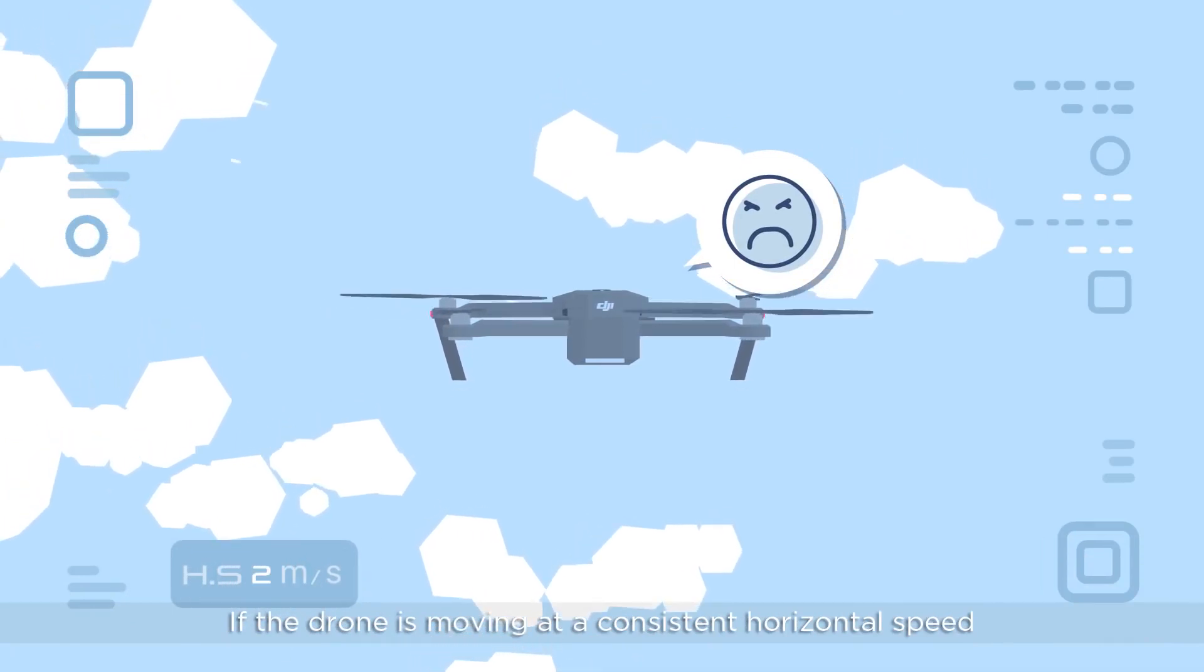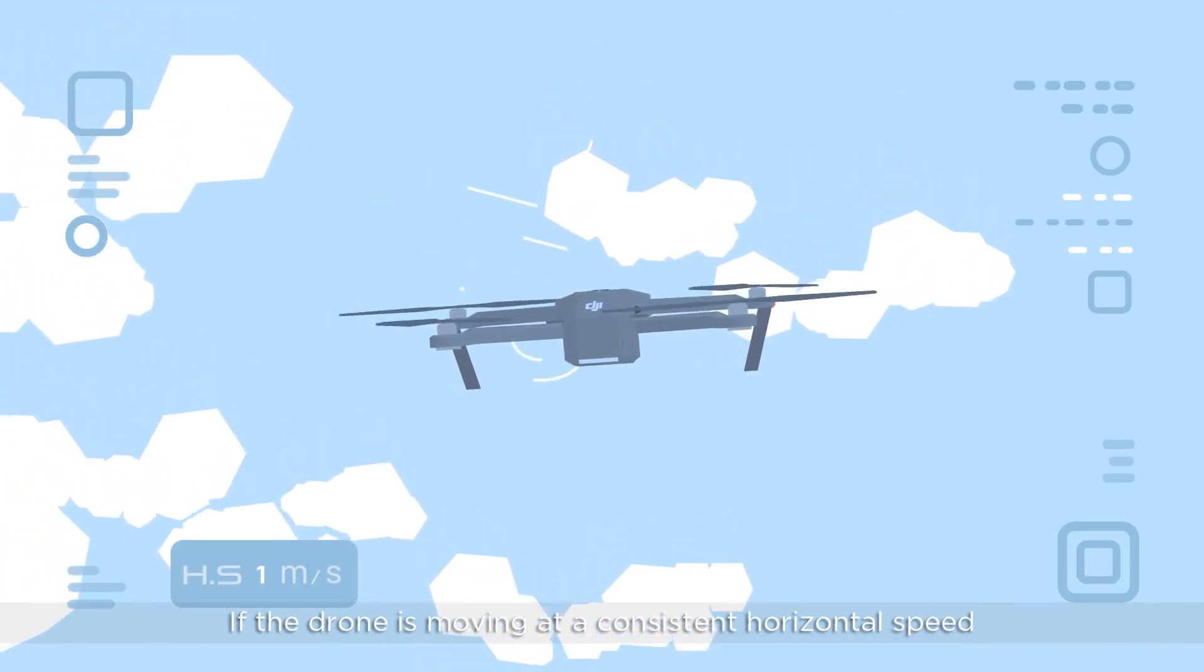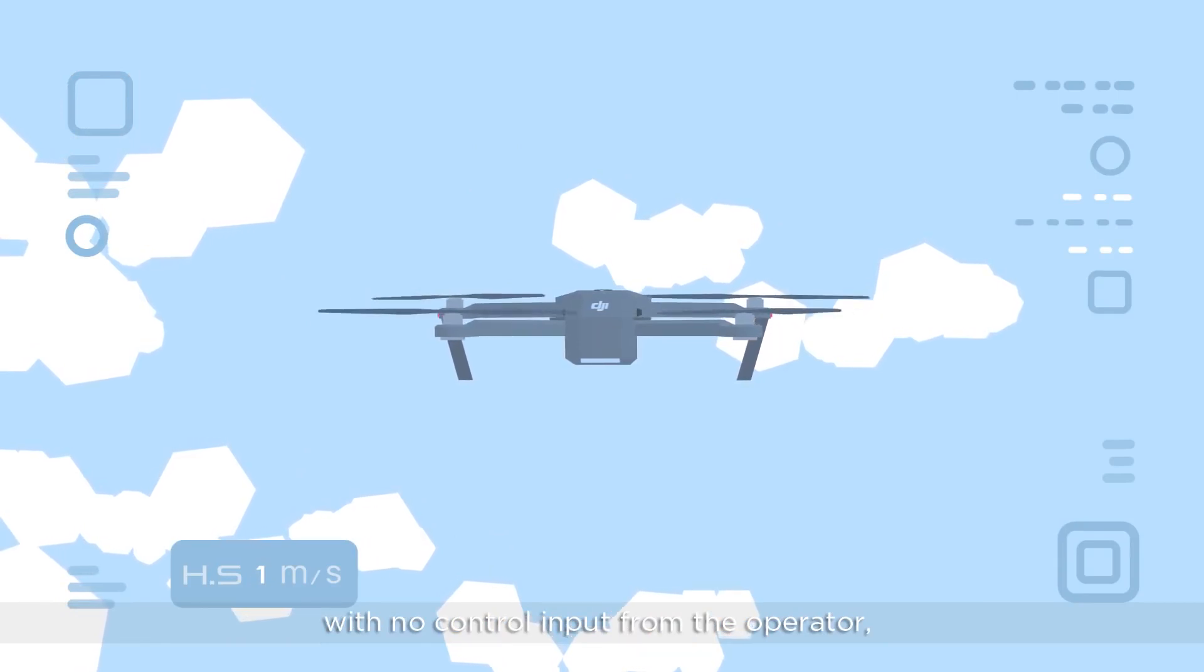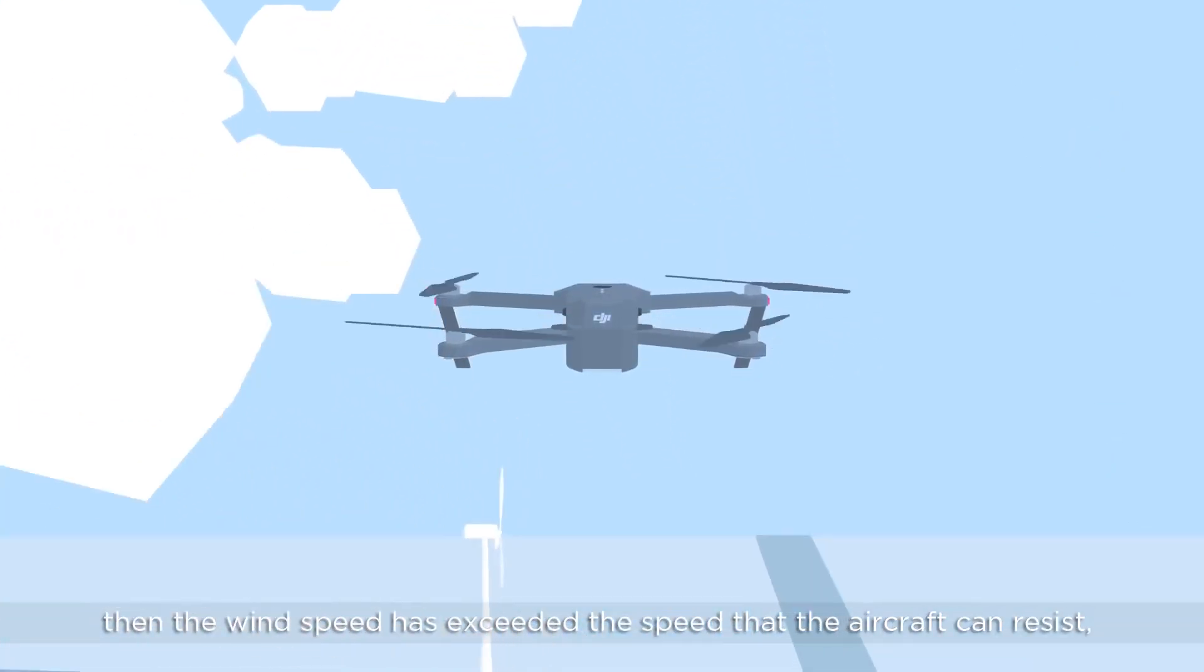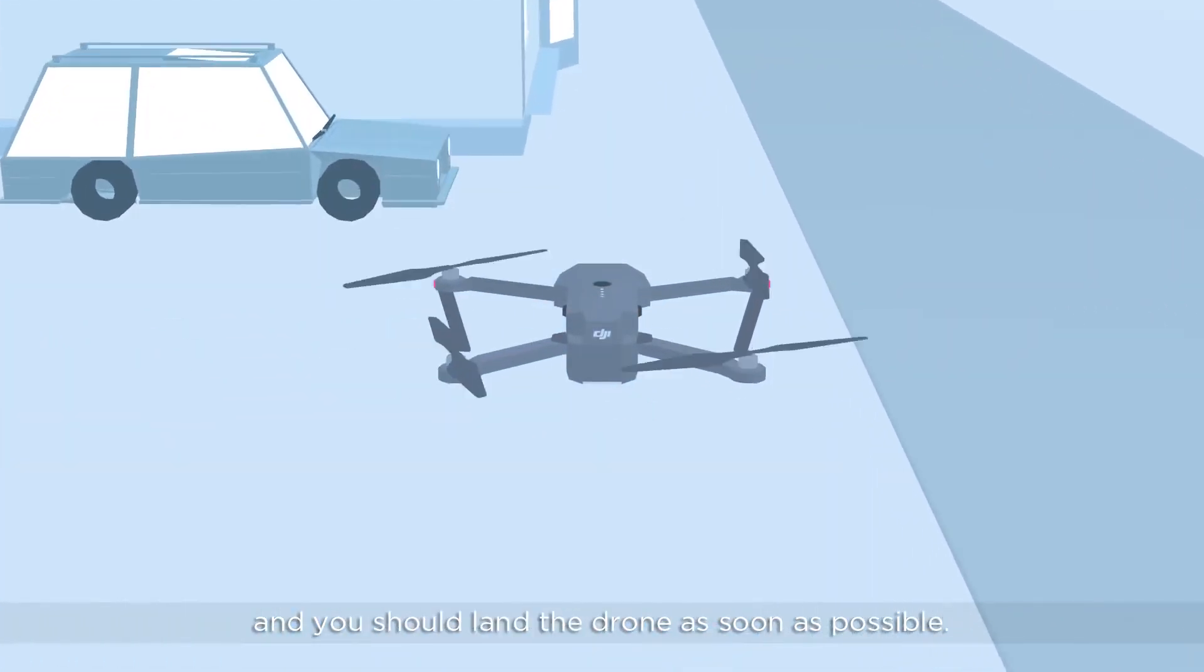If the drone is moving at a consistent horizontal speed with no control input from the operator, then the wind speed has exceeded the speed that the aircraft can resist, and you should land the drone as soon as possible.